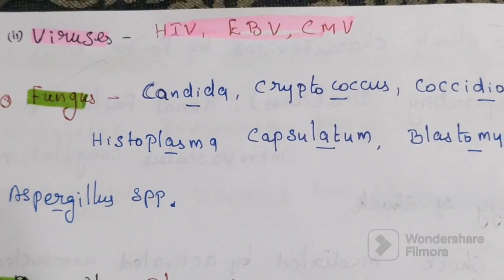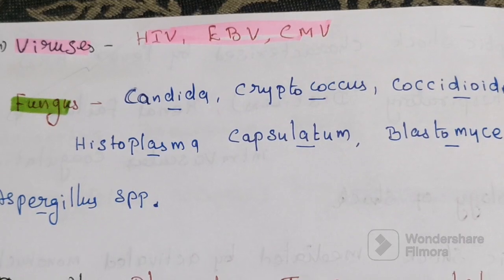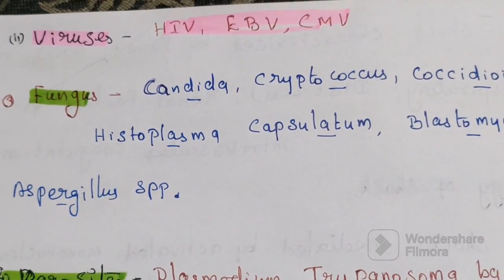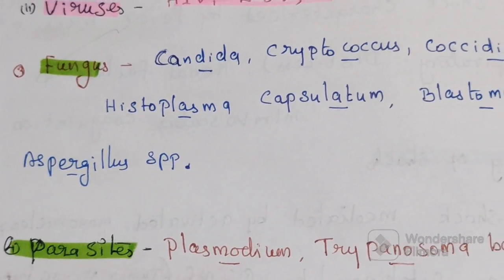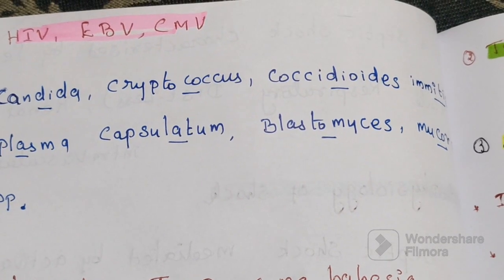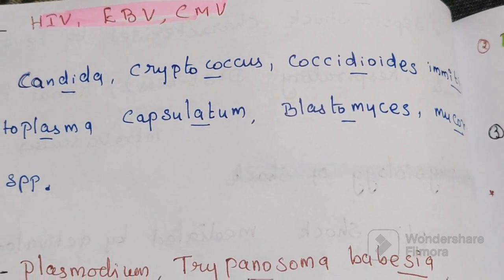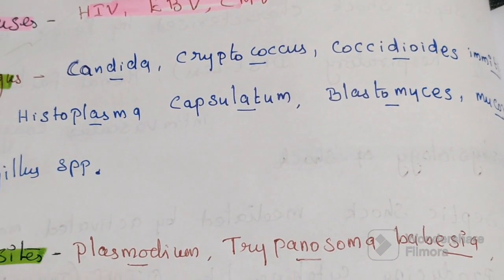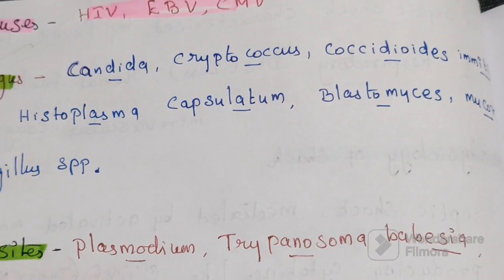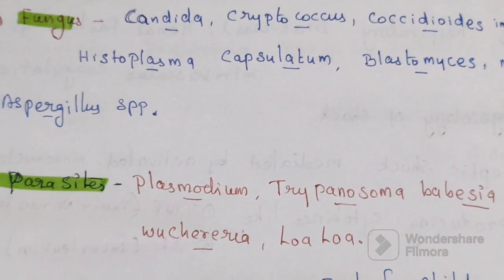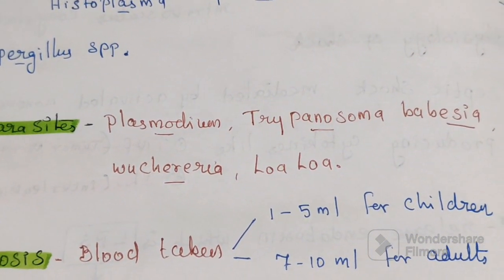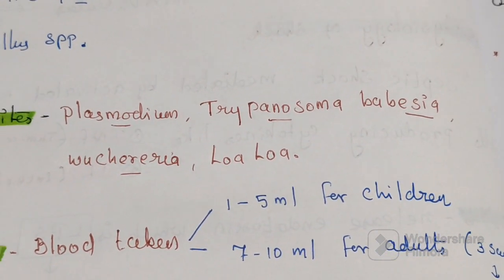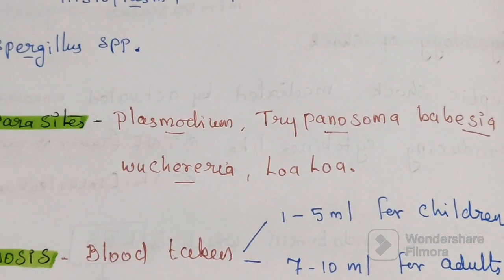Viruses causing bloodstream infection include HIV, Epstein-Barr virus, and cytomegalovirus. Fungi include Candida, Cryptococcus, Histoplasma capsulatum, Blastomyces, Mucor species, and Aspergillus species. Protozoa causing bloodstream infection include Plasmodium, Trypanosoma, Wuchereria, and Leishmania.